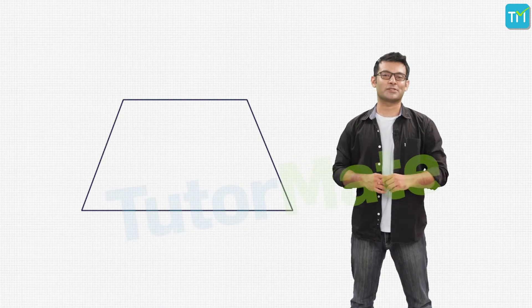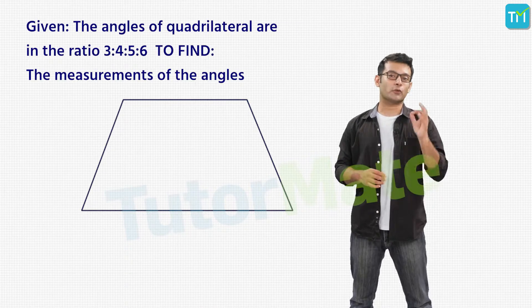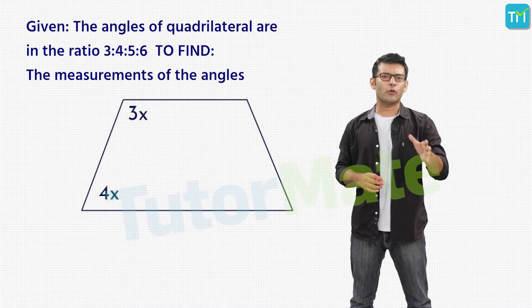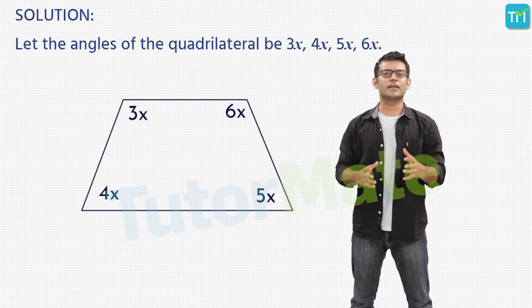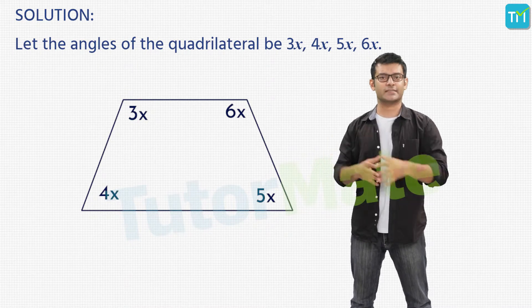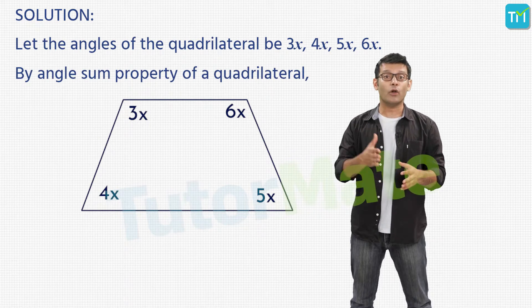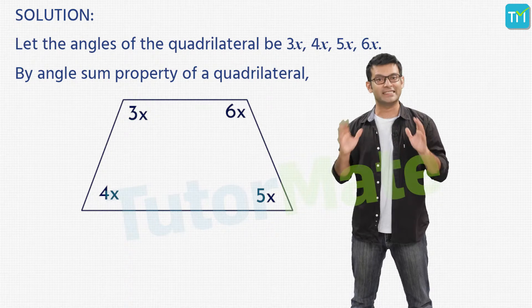Now, let me ask you something. What if you were given a problem wherein the angles of a quadrilateral are in a particular ratio? Say, 3 is to 4 is to 5 is to 6. So let's assume the angles to be 3x, 4x, 5x and 6x. Now, using the theorem, we know that the sum of all four angles of the quadrilateral is equal to 360 degrees.